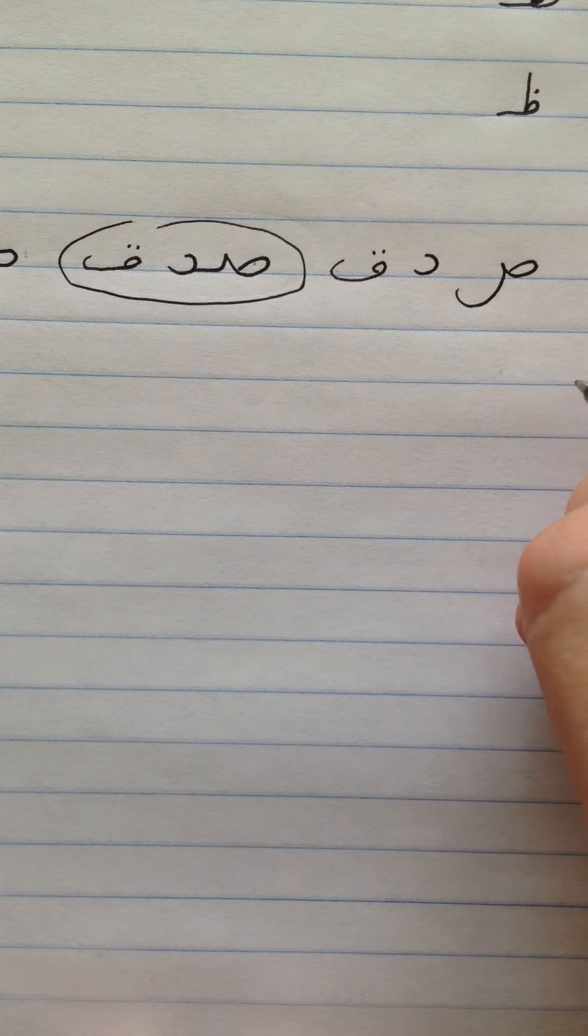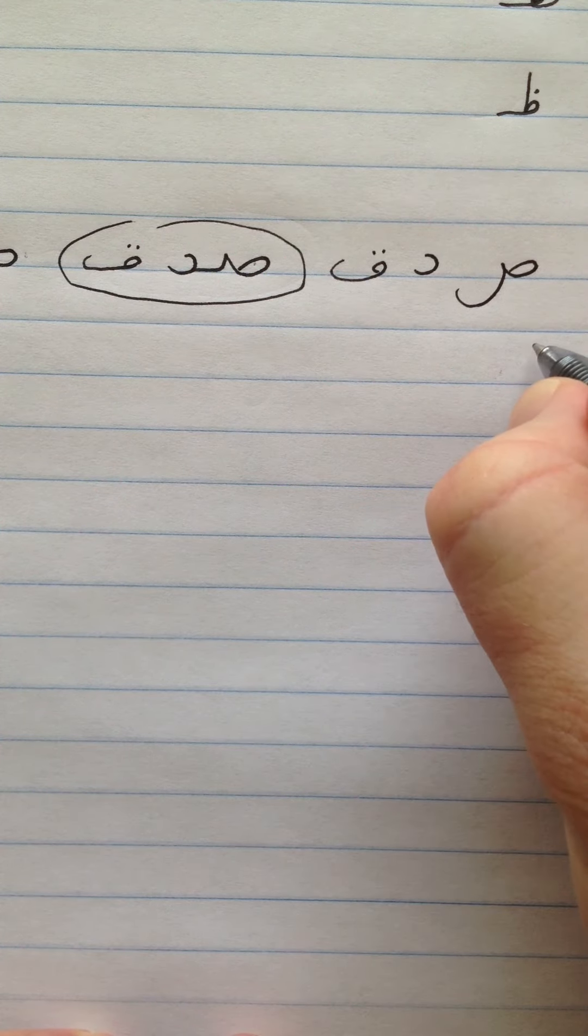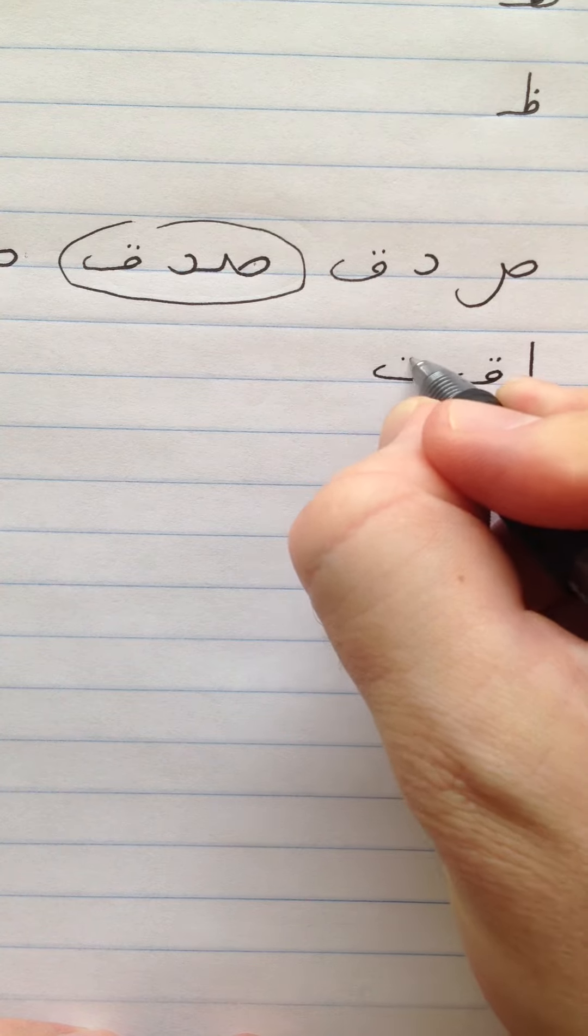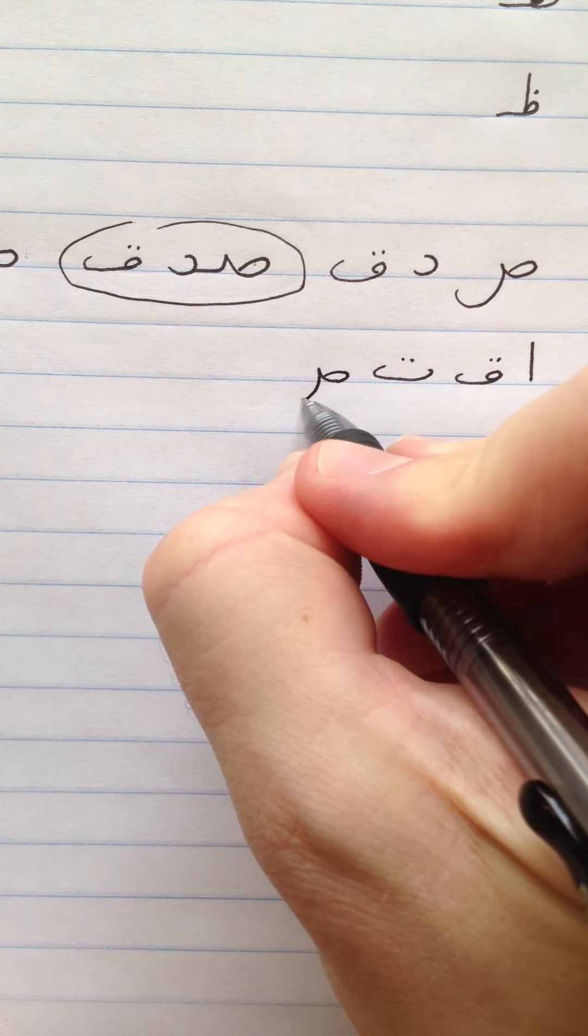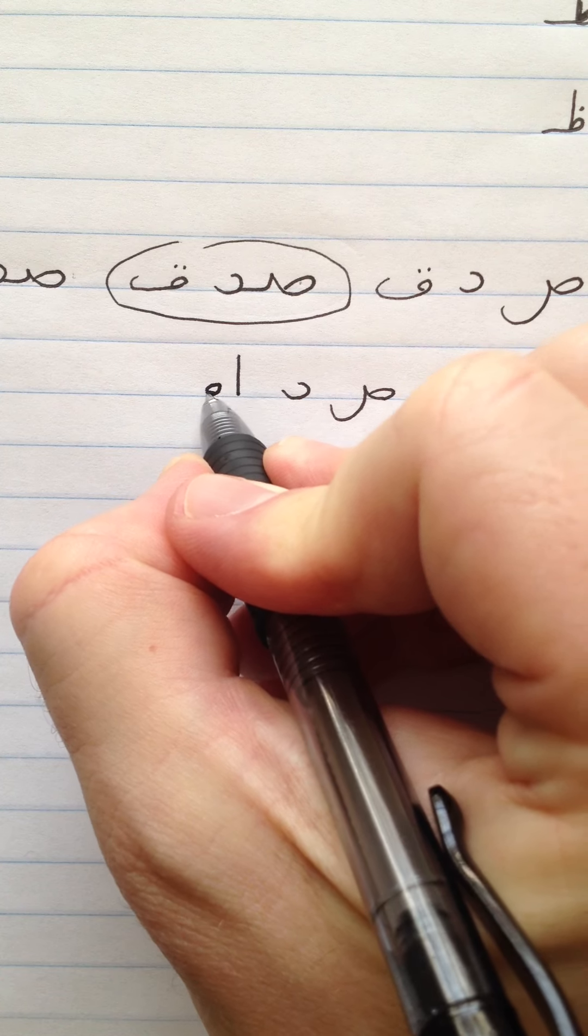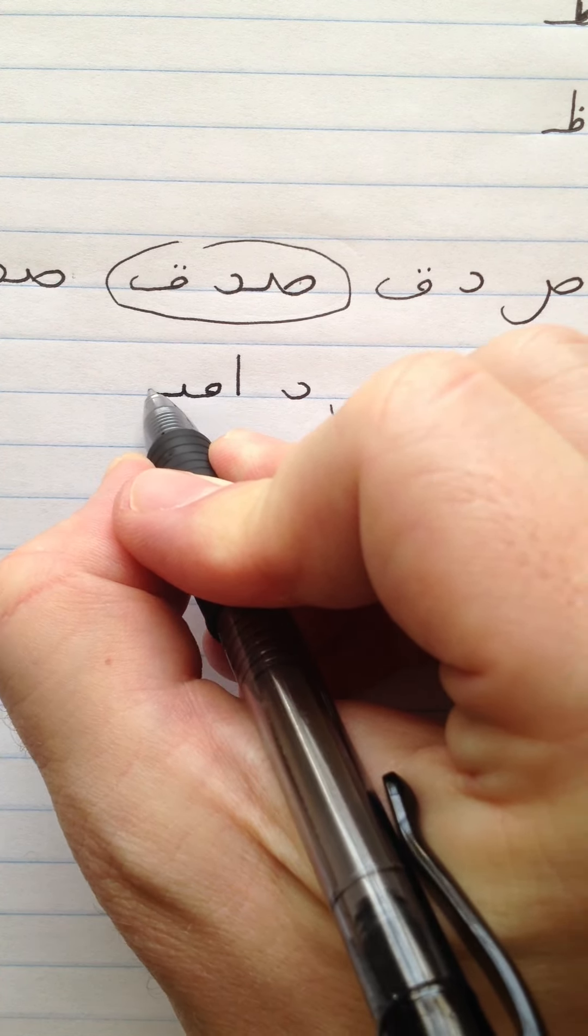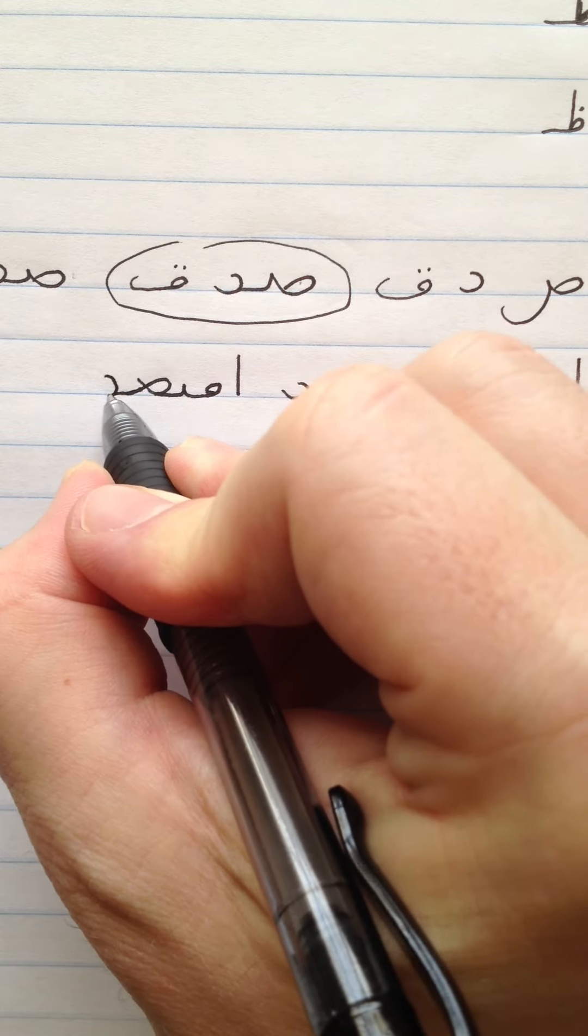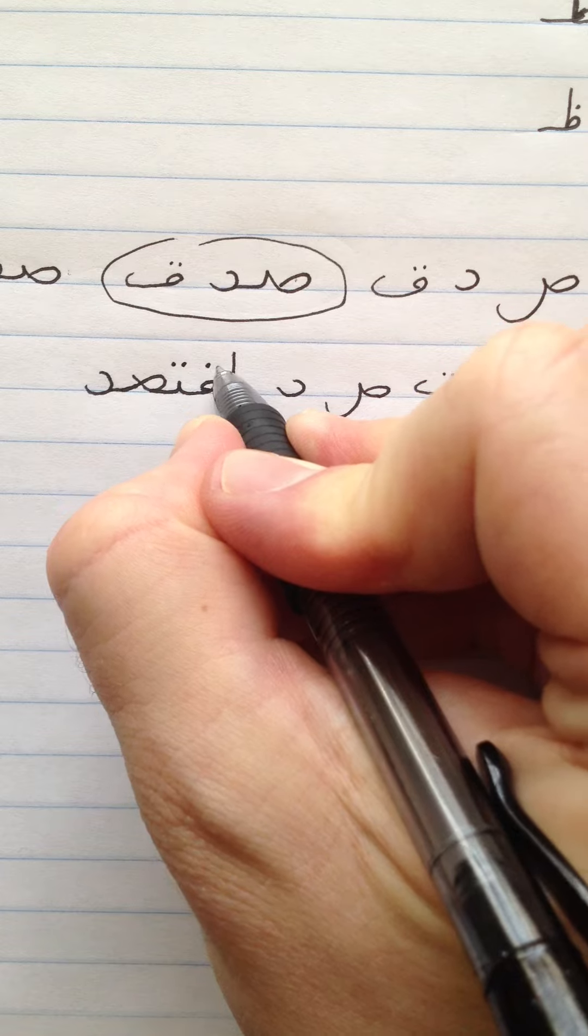Now the next word we'll look at is Ektasad. This means economy. It's spelled Aleph, Khaf, Teh, Swad, Dal. Now to connect these letters: Aleph, which does not connect on the left, Khaf-Teh is one peak, Swad - you get your loop and the peak on the left there - and then connect with Dal. Don't forget your dots. Ektasad. Now let's look at that one more time.